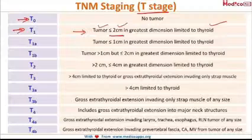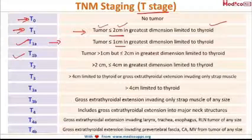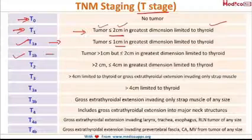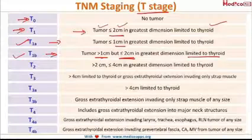T1 stage is subdivided into T1a and T1b. In T1a, the size of the tumor is less than 1 centimeter and it is within the thyroid gland — meaning it has not invaded other parts or structures in the neck region. In T1b, the size of the tumor is more than 1 centimeter but less than or equal to 2 centimeters, and is within the thyroid gland, not invading other structures.